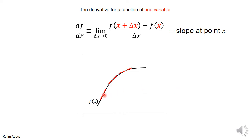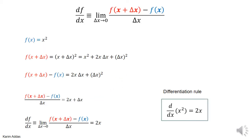The slope at particular points changes as you move to different points, so the derivative of the function will be different at those points. To recall how we got differentiation rules — for instance, the derivative of x squared is 2x — we apply this definition: take f of x plus delta x, which gives x plus delta x all squared, subtract f of x, divide by delta x, and take the limit when delta x goes to 0 to get 2x. This is how all differentiation rules are derived.